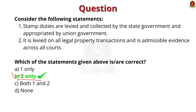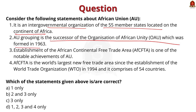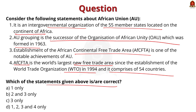Consider the following statements about the African Union. It is an intergovernmental organization of 55 member states located on the continent of Africa. The African Union grouping is the successor of the Organization of African Unity which was formed in 1963. The establishment of the African Continental Free Trade Area is one of the notable achievements of the African Union. The African Continental Free Trade Area is the world's largest new free trade area since the establishment of WTO in 1994, and it comprises 54 countries. Which of the statements given above are correct? The correct answer is D — all statements are correct.